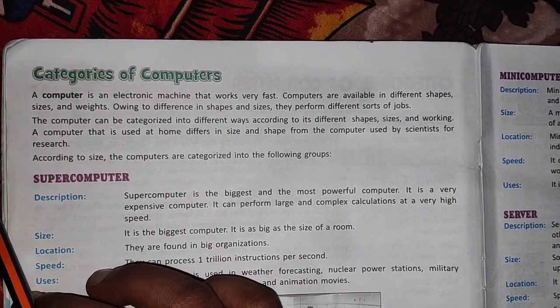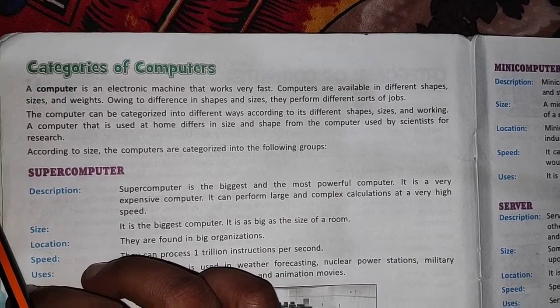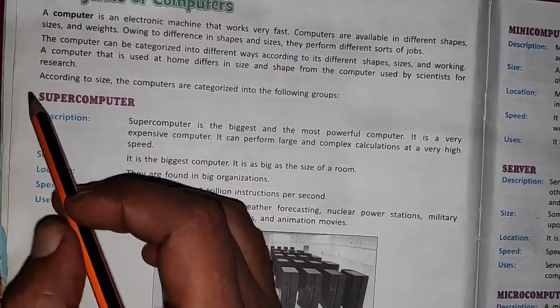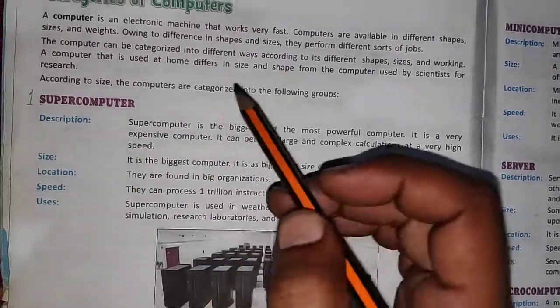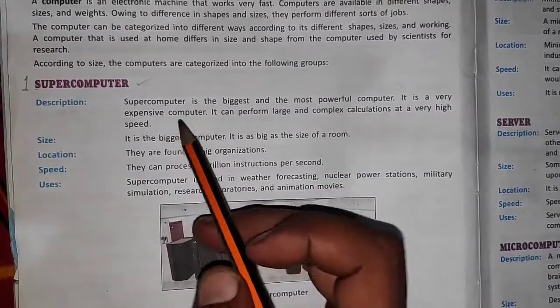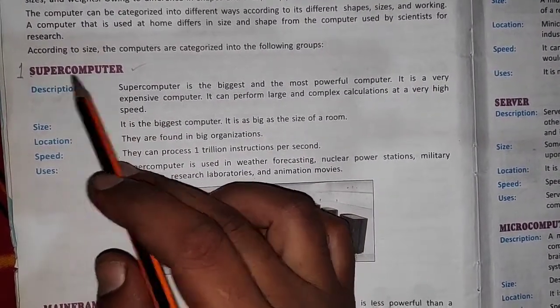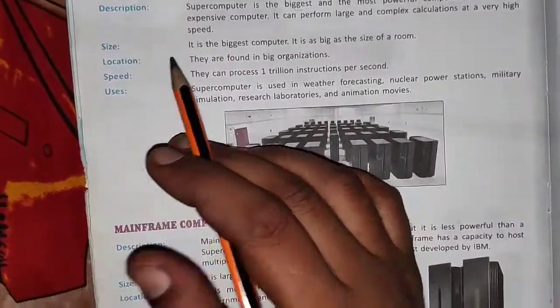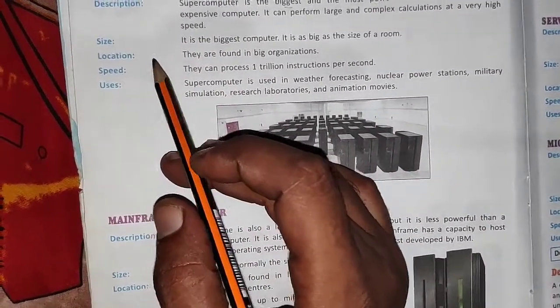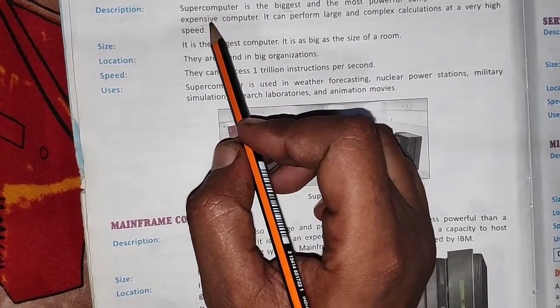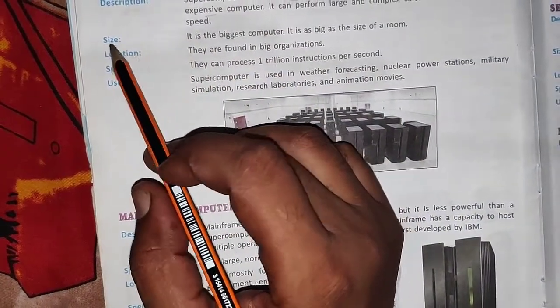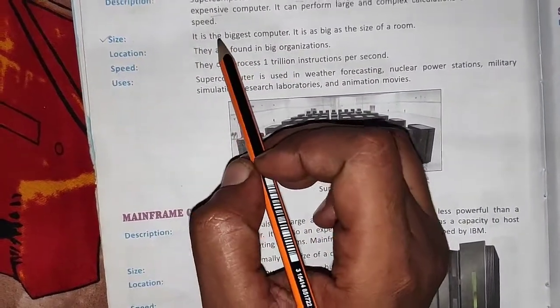According to size, shape, and working, we can categorize computers in the following ways. First, the most powerful computer is called the supercomputer. The supercomputer is a very large computer — it is the biggest and most expensive computer. Its speed is very fast and it can perform large and complex calculations at very high speed. The size of a supercomputer can be the size of a room.